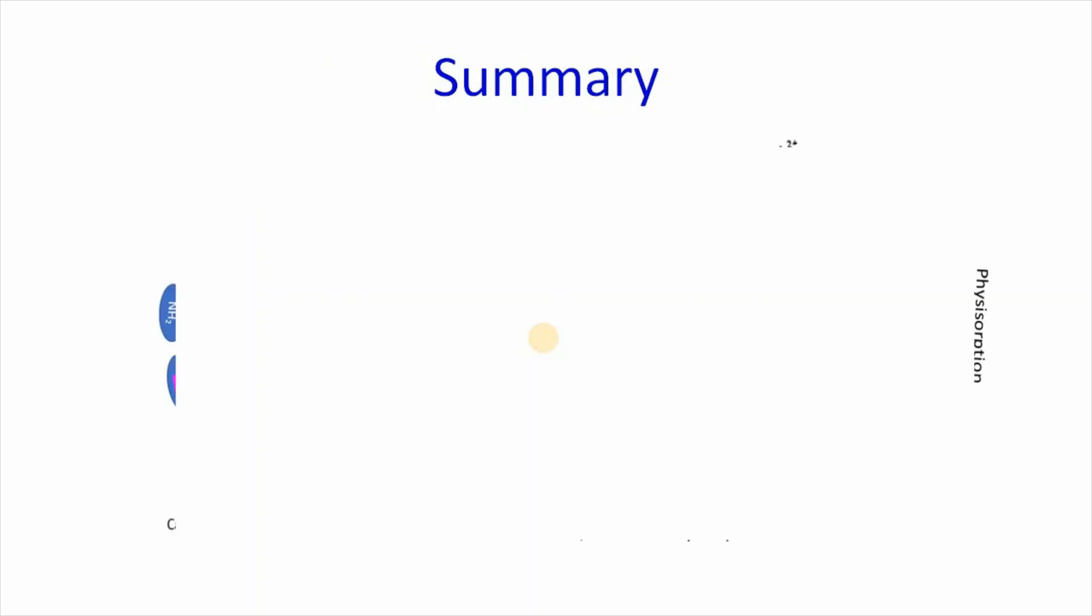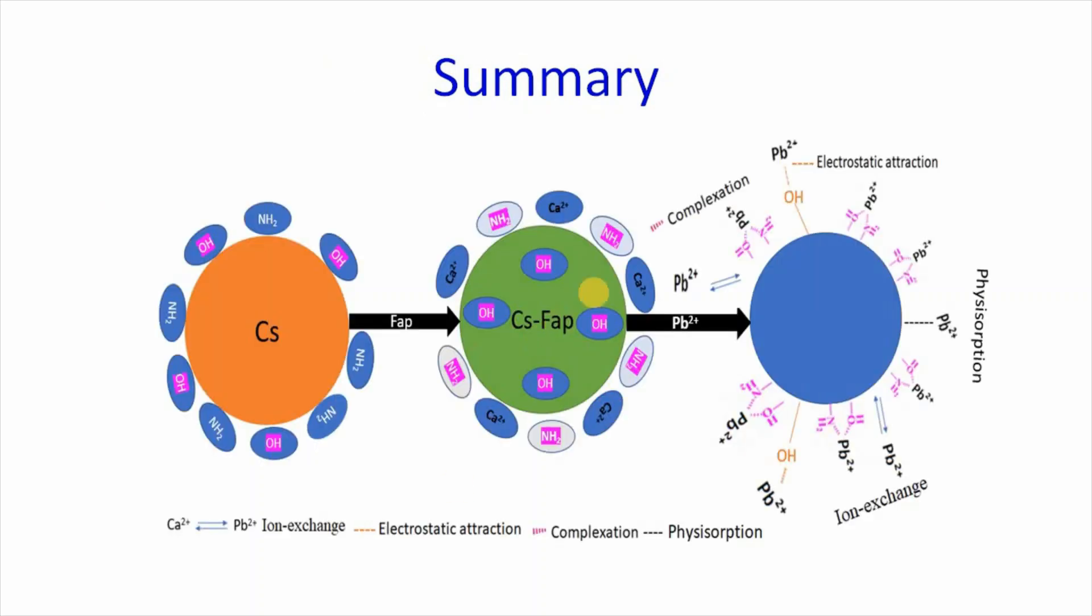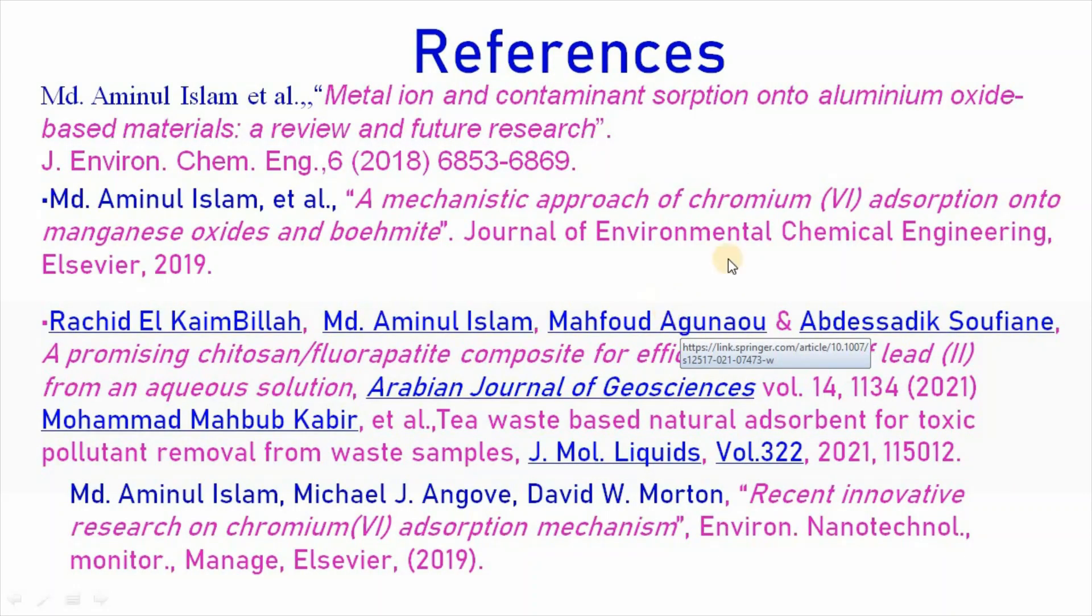From the above discussion, we can summarize this. And we can say that pollutant adsorbed onto surface by physisorption, ion exchange, electrostatic attraction, and complexation. And these are the references from which most of the information have been collected. And thanks for watching.